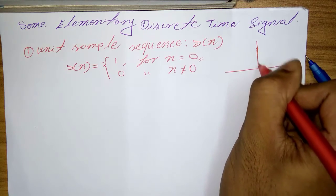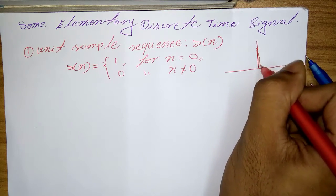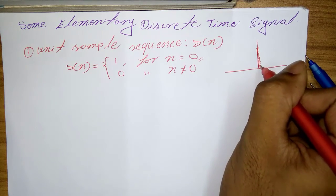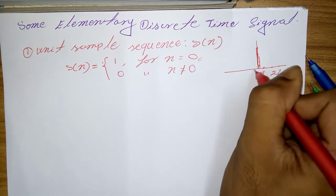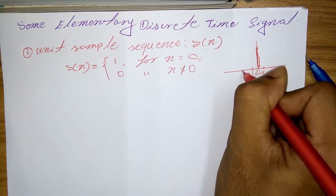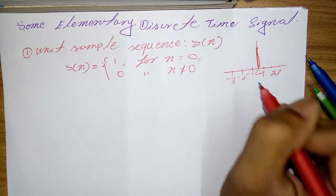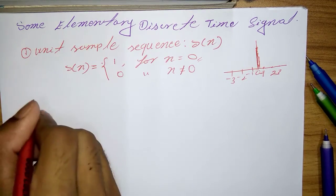The unit sample sequence is much less mathematically complicated. The graphical representation of delta n is like that. So impulse, here the only level: 1, 2, 3, 0, minus 1, minus 2, minus 3.